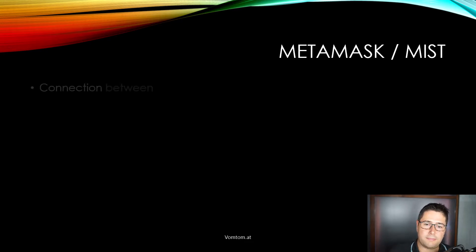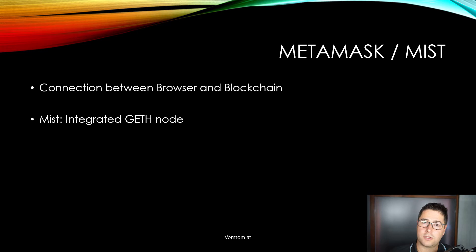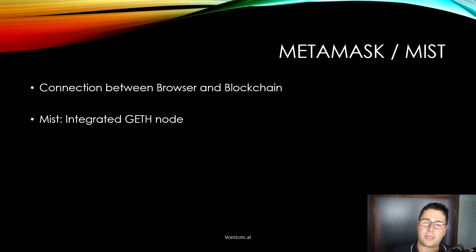Now let's talk about MetaMask and Mist. MetaMask and Mist are both like a connection between the browser and the blockchain, and they make this incredibly easy. In the case of Mist, it has an integrated Geth node — you just don't see it. When you start Mist, it will look like a regular browser, but in the background it will start its own Geth node and begin downloading all the blocks.